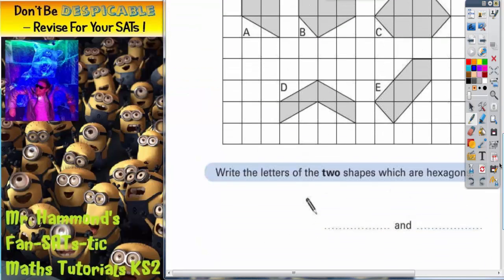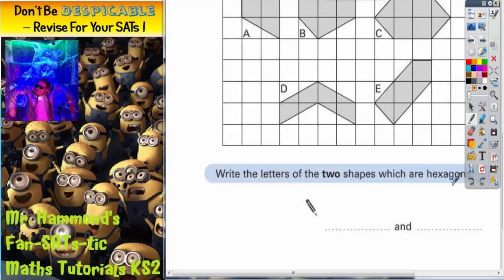It says, write the letters of the two shapes which are hexagons. Well you should know that pentagons have five sides, hexagons have six sides.